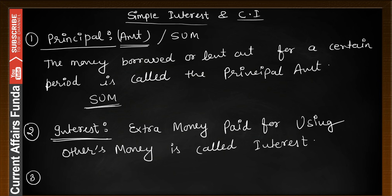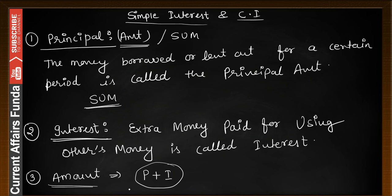Third thing — what is the meaning of amount? Amount will be considered as principal plus interest. अगर आपने जो पैसा लिया है उसमें interest को add करके total combined package किसी को return कर रहे हैं, उसको हम amount कहेंगे। जो extra money दे रहे हैं उसको interest कहेंगे। So amount is a combination of principal plus interest.